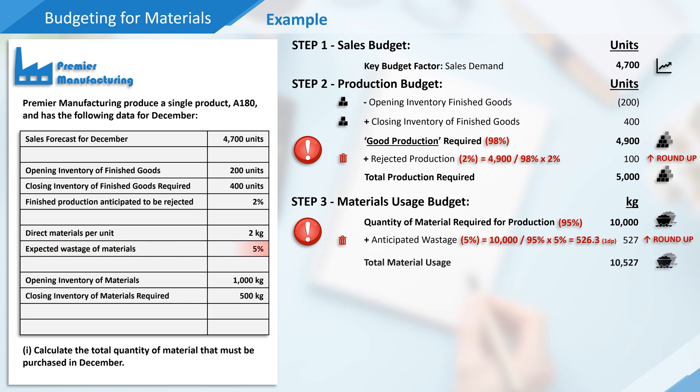So now we know how much material our 5,000 units will require: 10,527kg. Though we're not quite finished yet.